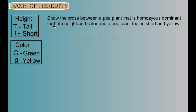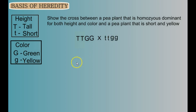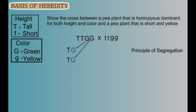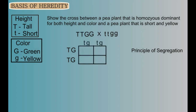A plant that's homozygous dominant for height will have two big T's, and homozygous dominant for color two big G's: TTGG. If a pea plant is short it must have two little t's, and if it's yellow, two little g's: ttgg. Due to the law of segregation, each parent can only give half of its information — one T and one G. So the F1 gametes from the tall green parent are TG, and from the short yellow parent are tg.